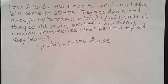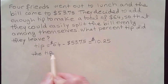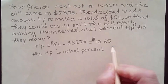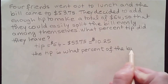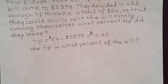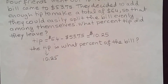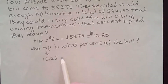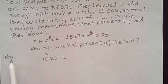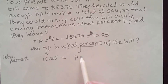They would like us to find the percent tip, which means you have to answer the question: the tip is what percent of the bill? So this is 10.25 equals what percent. We're going to let p be the percent — so 'what percent' gives us p times the bill.